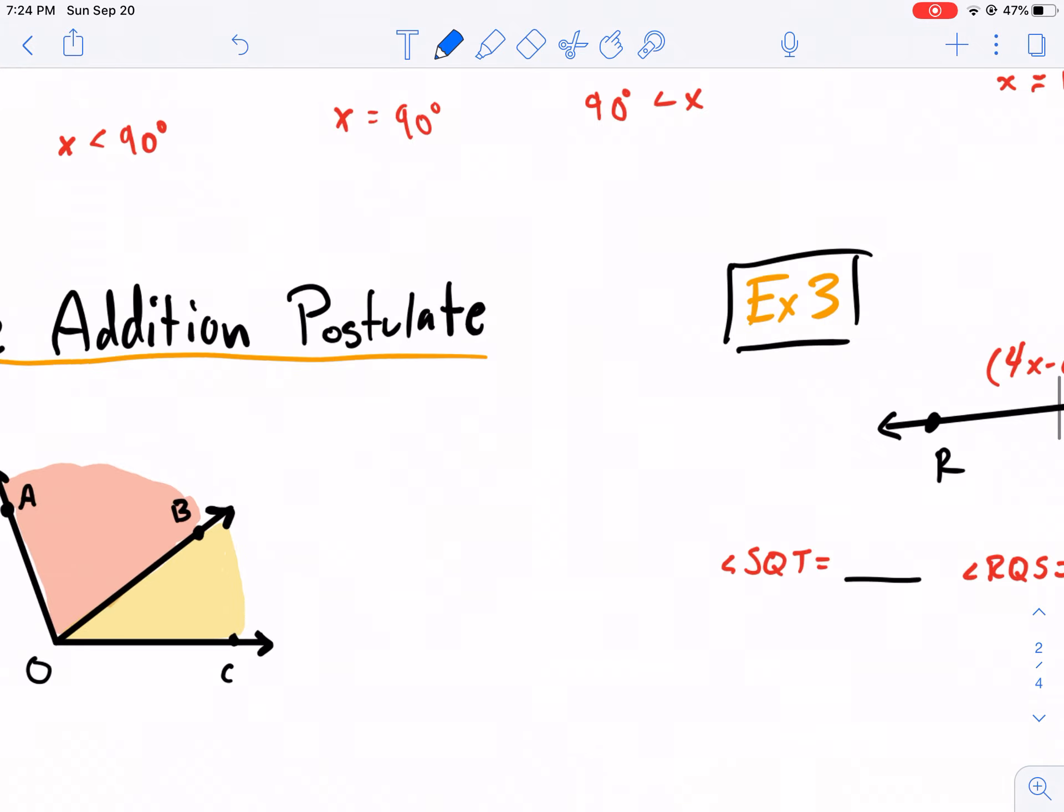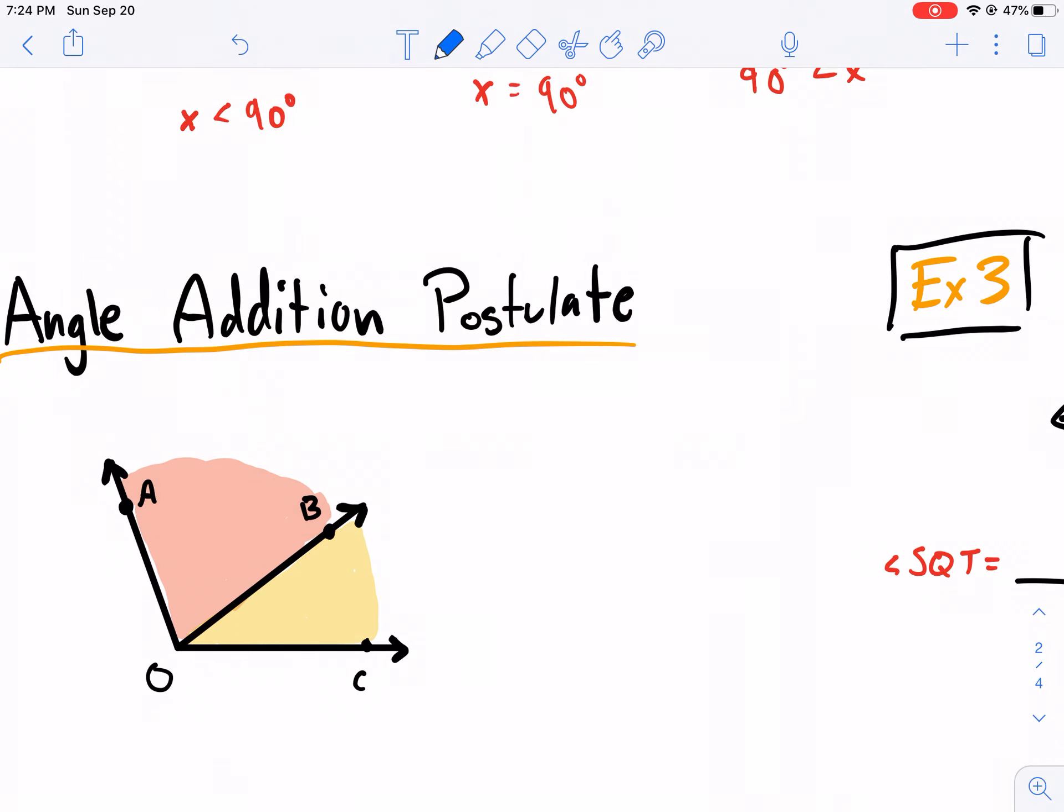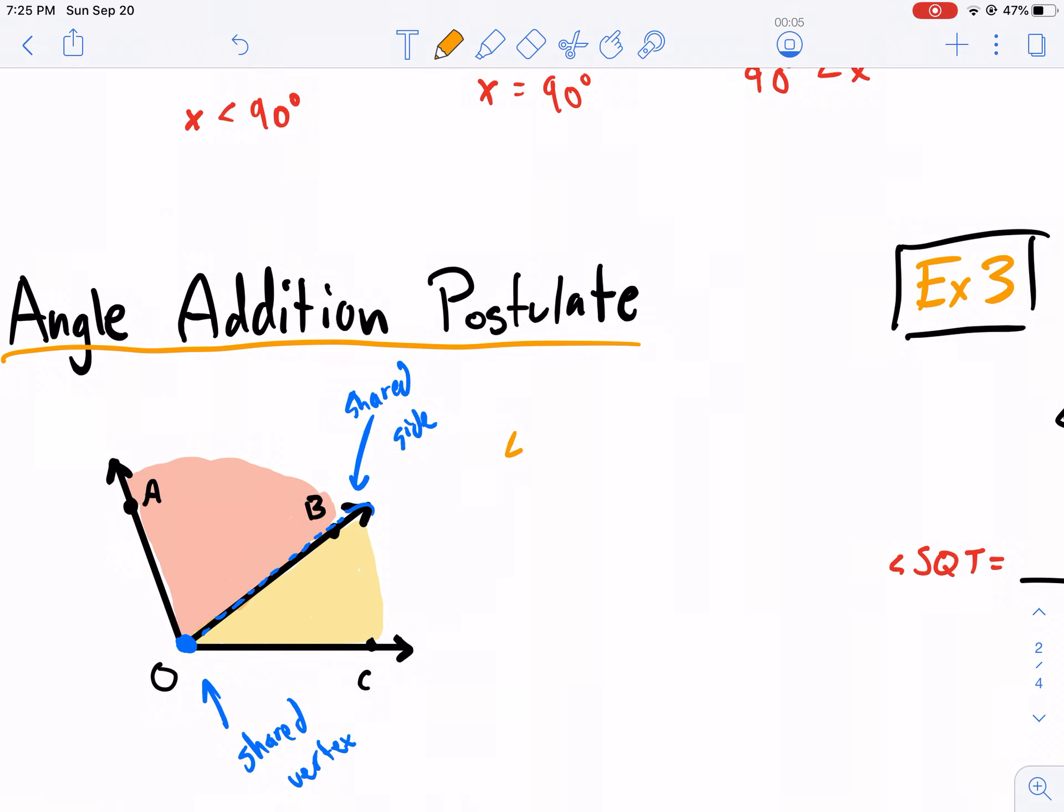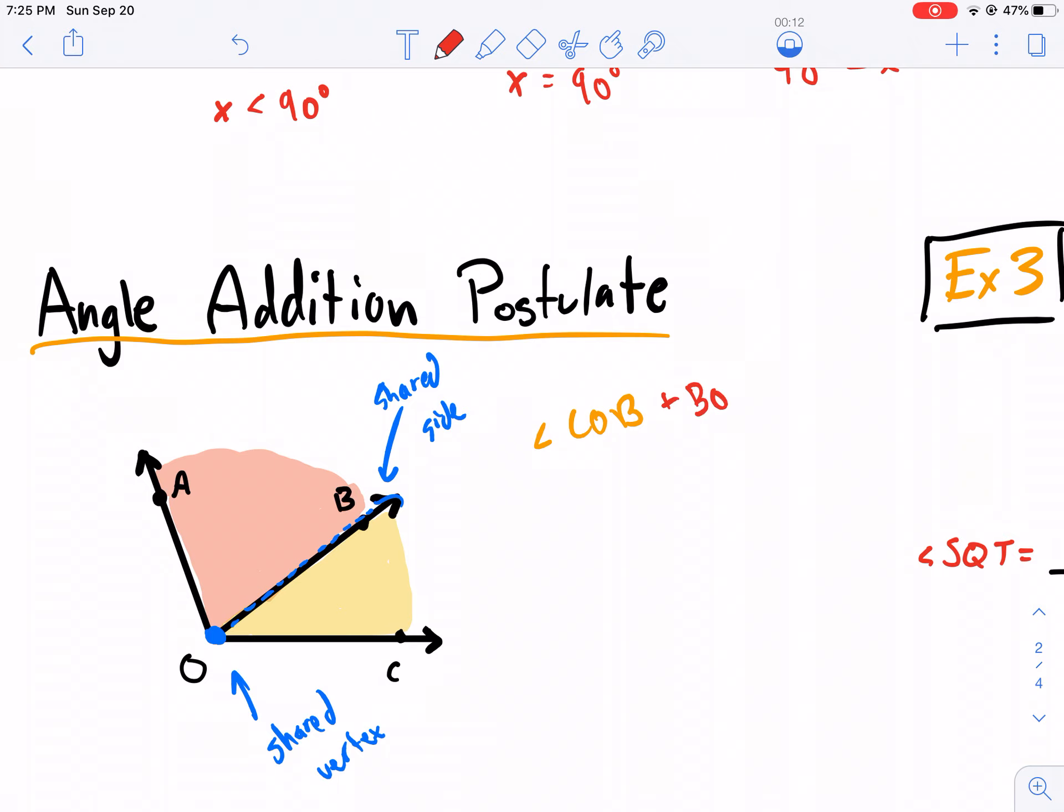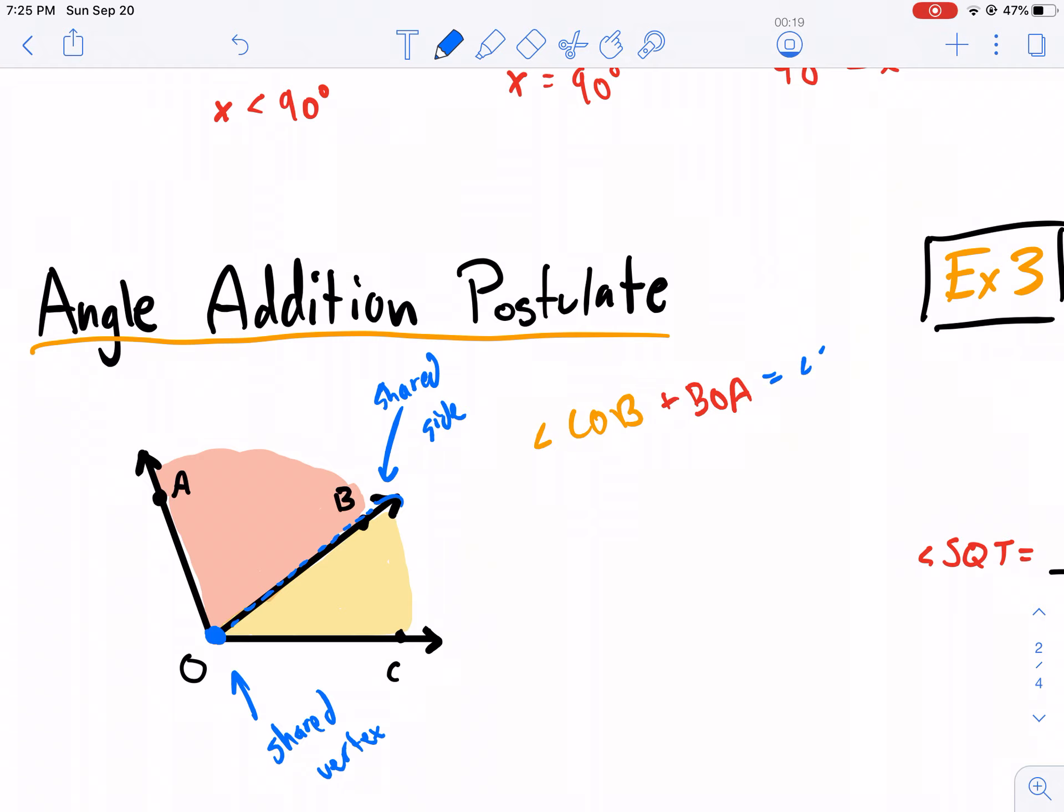We have the angle addition postulate. This essentially means a smaller angle added together with another angle, adjoined to it through a side and connected with the vertex composes the bigger angle. So one thing we'll notice here, I know it just said a lot. We have a shared vertex. We have a shared side. This is a shared side. So I can say here that angle COB and then we'll add this to angle BOA. And this is going to be equal to our big angle, angle COA.